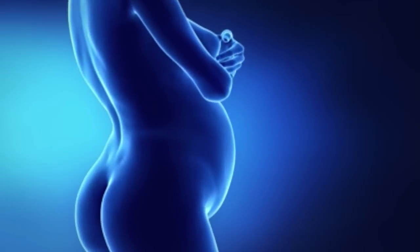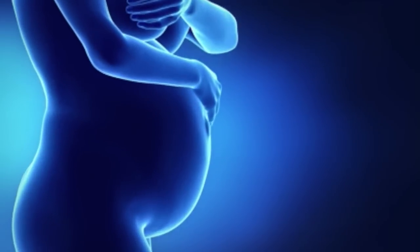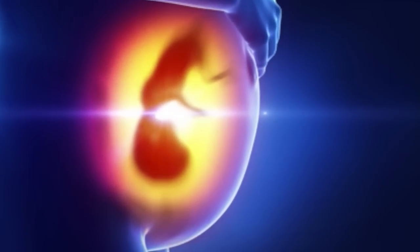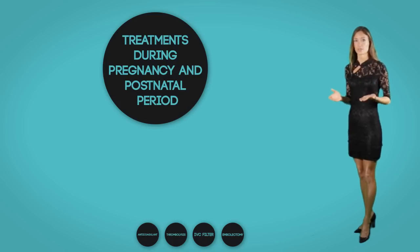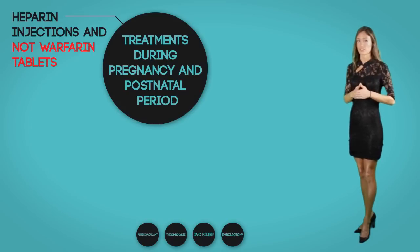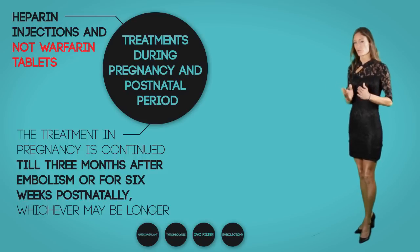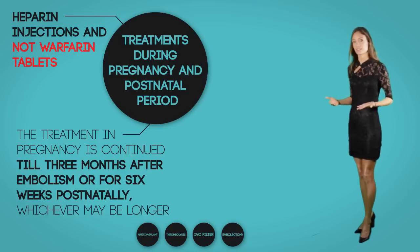A higher risk of PE exists at any phase of pregnancy until six weeks postnatal. Any manifestations of DVT or PE in a pregnant or postnatal woman need to be examined quickly. Treatment for PE in pregnancy is done with heparin injections rather than warfarin, since warfarin carries a risk of causing birth defects in the fetus. Treatment is continued until three months after the embolism or for six weeks postnatally. Postnatally, warfarin can be given instead of heparin once bleeding from the birth has settled.